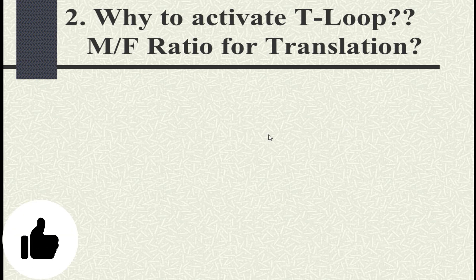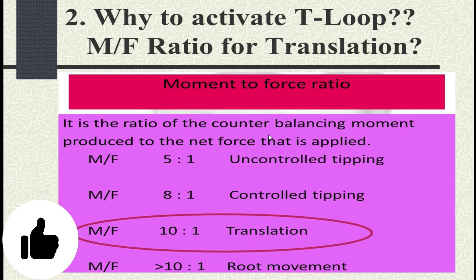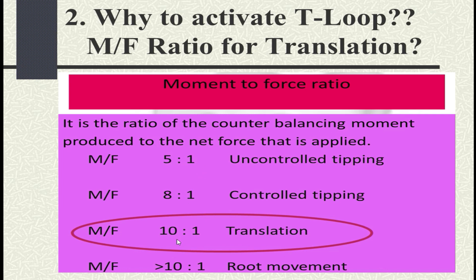The second thing is why we activate the T-loop and what is the correct moment-to-force ratio for translation. We activate the T-loop because by stretching the loop we can produce a horizontal force, but moment is not produced by stretching alone. Moment is necessary for root uprighting — it is also called the counter-balancing moment, because your force retracts the teeth while the root tries to come forward and the crown tries to tip back, counteracting that forward root movement.